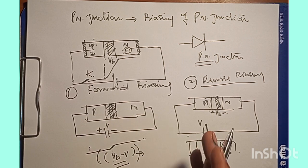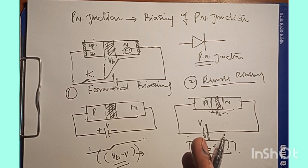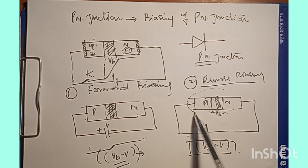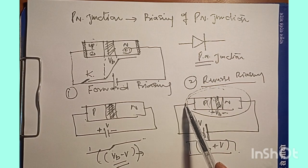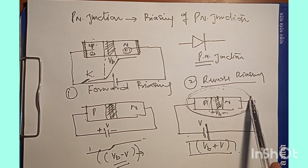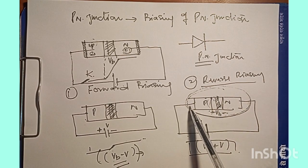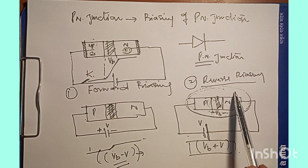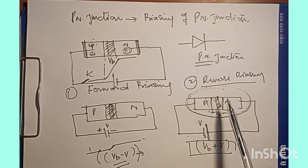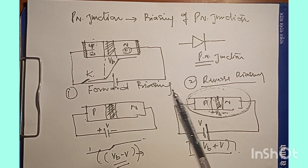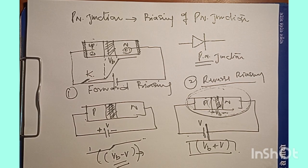Due to the sweep of minority carriers in the P region and N region, this reverse saturation current is not affected by an increase in applied voltage, but it does increase with an increase in temperature. This is because the minority carrier density responsible for the reverse saturation current increases with temperature. The current due to minority charge carriers is very small in nature but can be influenced by temperature — if temperature is increased, the reverse saturation current increases.